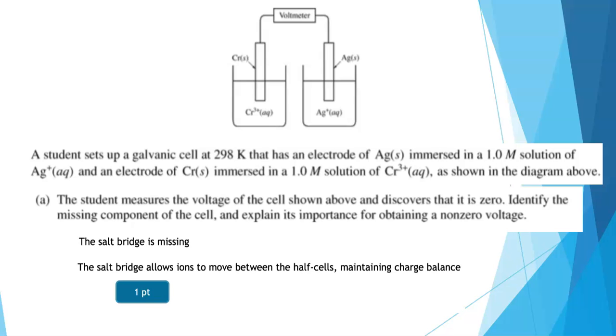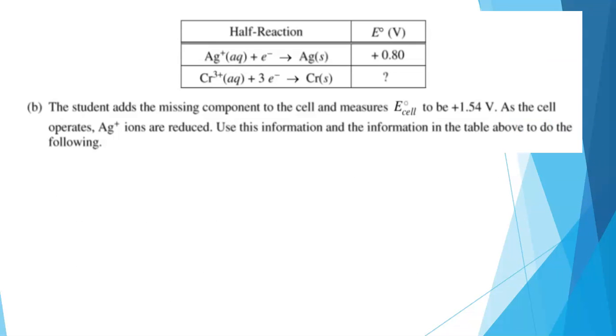I do want to go a little bit further. In the salt bridge, AP chemistry students really need to know more detail about what's happening. You need to know that anions move through the salt bridge to enter the anode compartment, and cations move through the salt bridge to enter the cathode compartment. This is how we're maintaining charge balance. The question continues with part B.